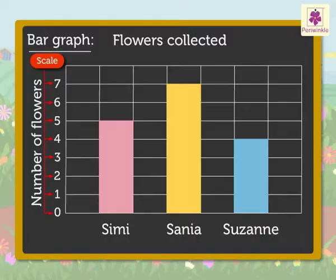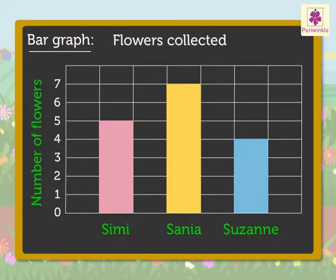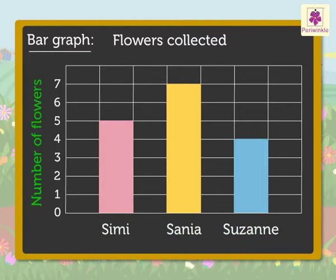The scale tells us the number each block is equal to. Now, let's see how we can read this bar graph of the flower farm example. The title, 'flowers collected', tells us the bar graph is about the number of flowers collected. The labels give us the information that the data is about who collected the flowers and how many. The scale tells us how many flowers were collected.